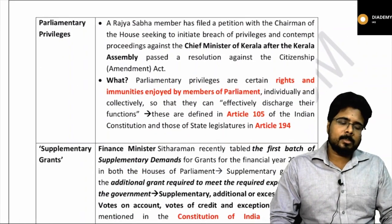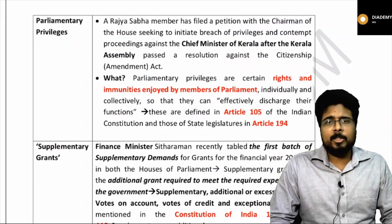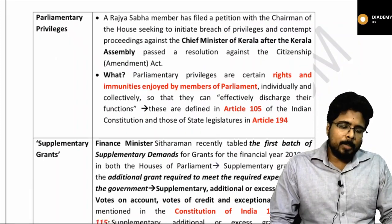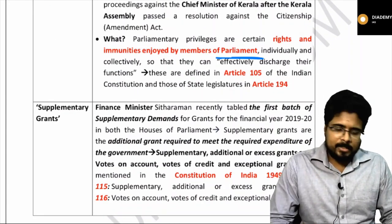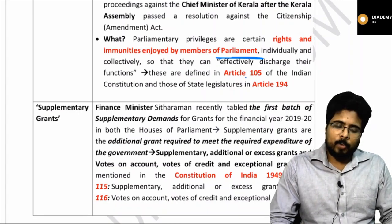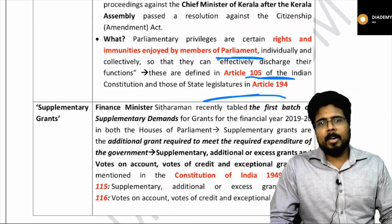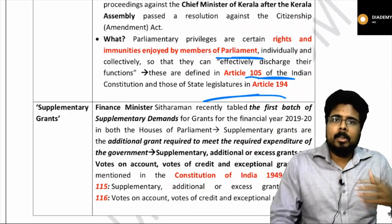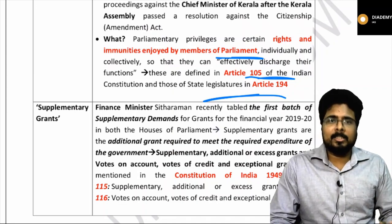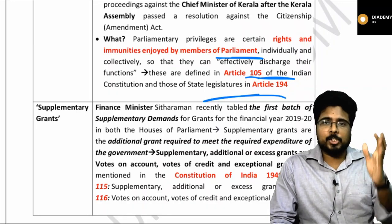Regarding parliamentary privileges: a privilege motion was filed against the Chief Minister of Kerala as Kerala passed a resolution against the Citizenship Amendment Act. Privileges are certain rights and immunities enjoyed by members of parliament, defined in Article 105 of the Constitution and in legislatures under Article 194. Supplementary Grants are additional grants required for the functioning of the government for that year — additional money that the government requires from the Consolidated Fund of India when the original budget amount is exhausted.